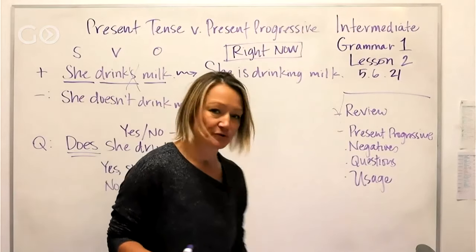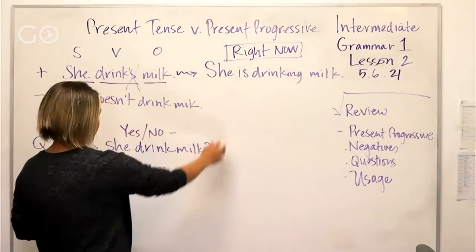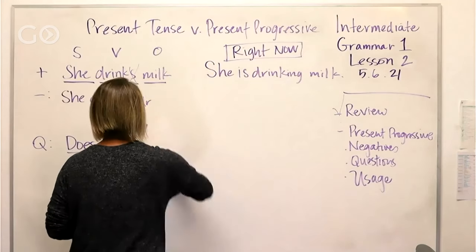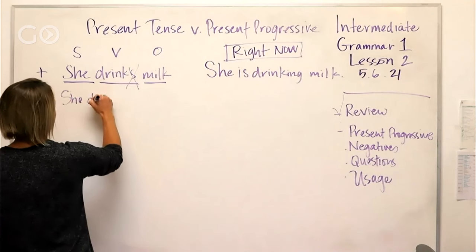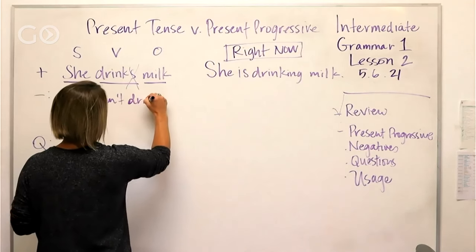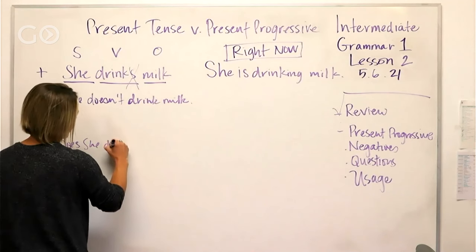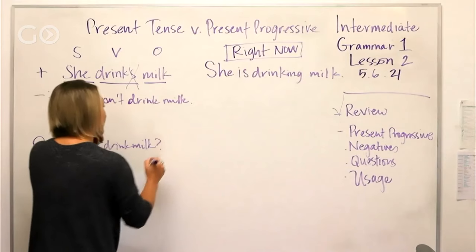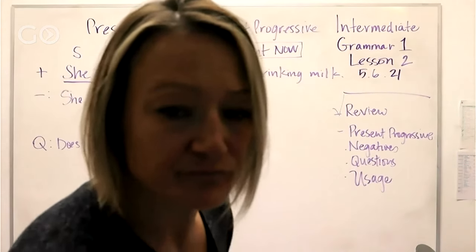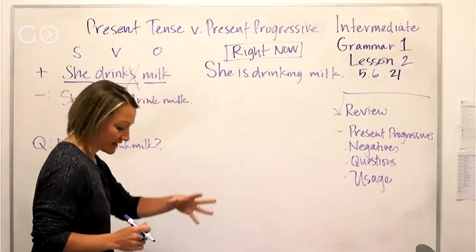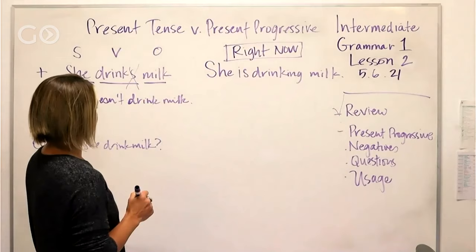For my members here, let's continue. Let's look at the present progressive. I'm going to rewrite that a little smaller so you guys can write this down: 'she doesn't drink milk' — that's your negative — and 'does she drink milk?' — that's your question. So 'she is drinking milk' — remember, this is happening in this moment right now.